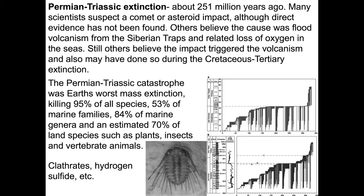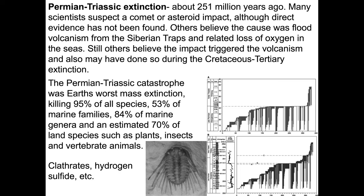We have a bit of an odd situation in that massive lava flows are present for both the Permo-Triassic extinction and the KPG extinction. The Permo-Triassic extinction was the worst — about 95 percent of species were wiped out, over 50 percent of marine families, 84 percent of marine genera, and an estimated 70 percent of land species including plants, insects, and vertebrates. Other culprits include clathrates — a weird kind of methane gas ice that forms under specific conditions. If those conditions change, these clathrates are destabilized and the ice becomes methane gas. Large pulses of hydrogen sulfide from what's called a strange love ocean or dead ocean could have led to an extinction event as well.